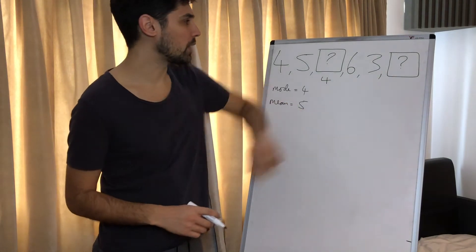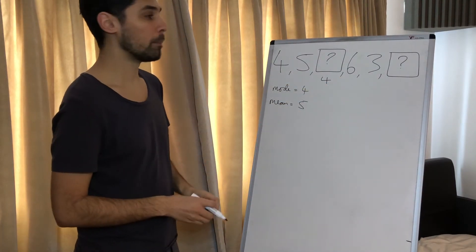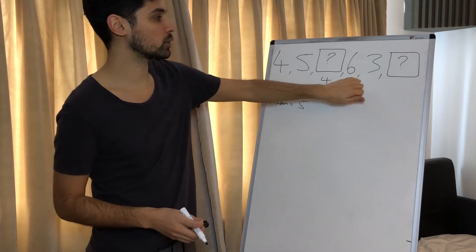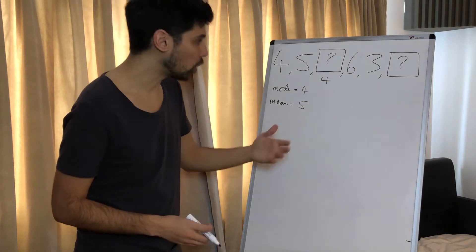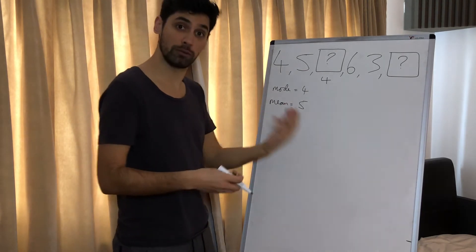Now what is this other number? It could be another four because we could have three fours—that's not a problem—but it can't be a five, a six, or a three because that would mean four is not the mode anymore. There would be an equal number of fours and something else.